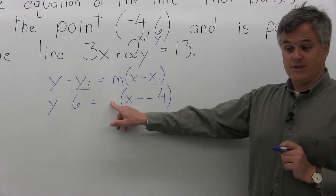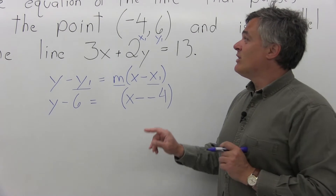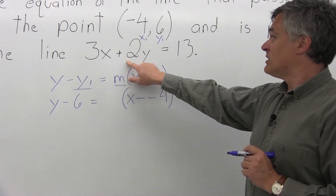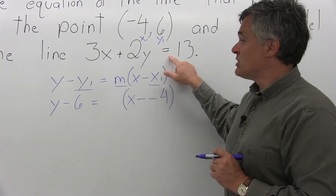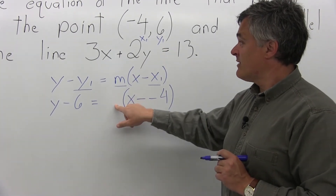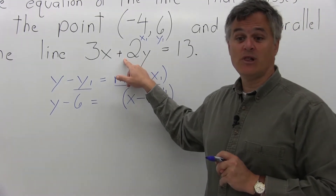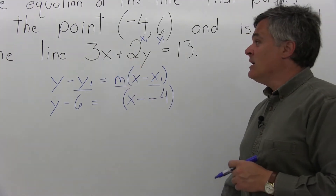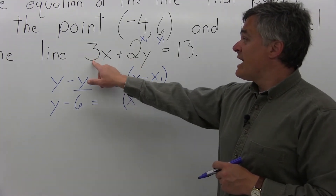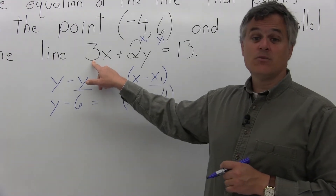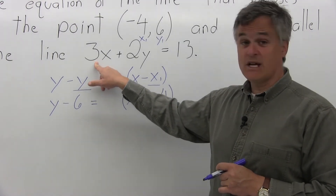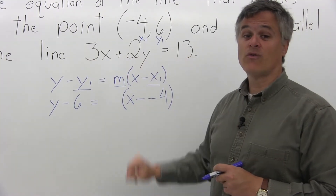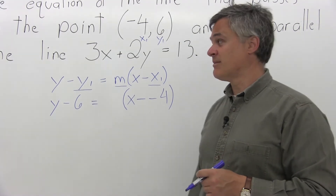Now, what about m, the slope? The line we're trying to find is parallel to the given line 3x plus 2y equals 13. So the slope of the line we're trying to find must be the same as the slope of the given line — that's what it means to be parallel. The slope will be the number in front of x once the given line is put in y equals mx plus b form.